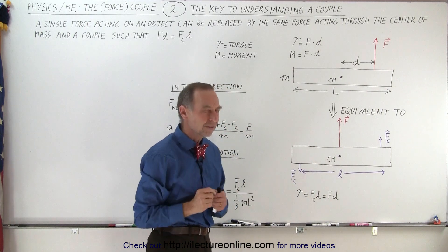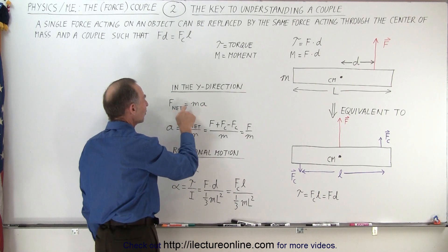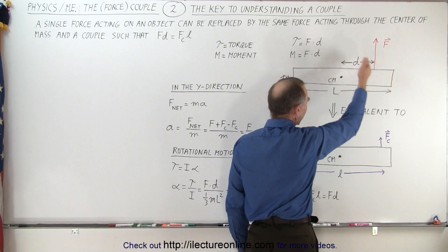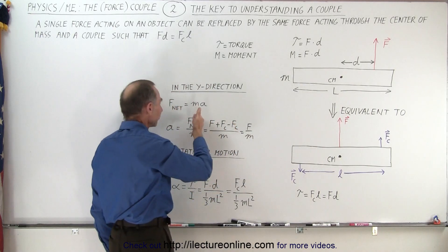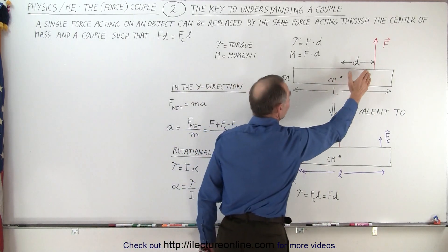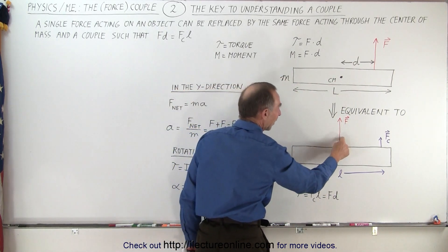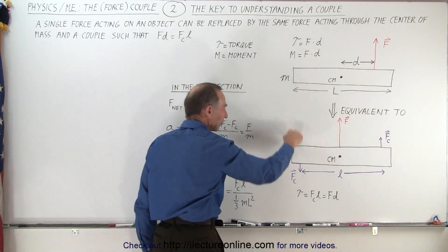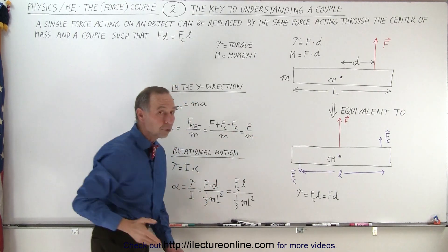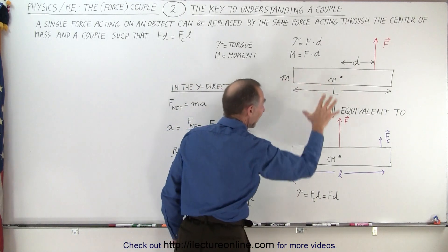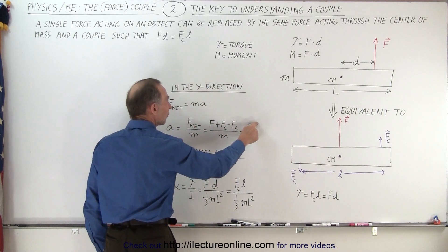How can we say these are the same? Looking in the Y direction, the net force equals mass times acceleration. In the first drawing, mass is M and force is F, so acceleration is simply F over M. In the bottom drawing, we have F plus F sub C in the positive direction and F sub C in the negative direction — they cancel, giving again F over M. So in translational motion, there's no difference: both cause acceleration in the positive Y direction equal to F over M.